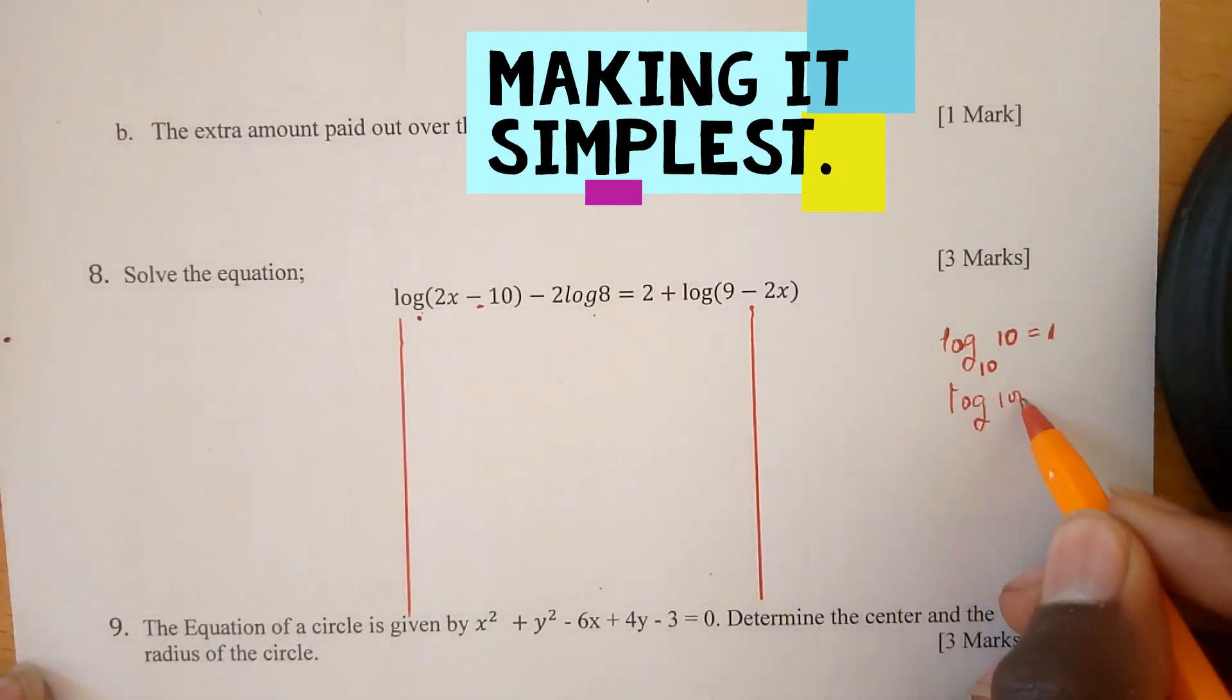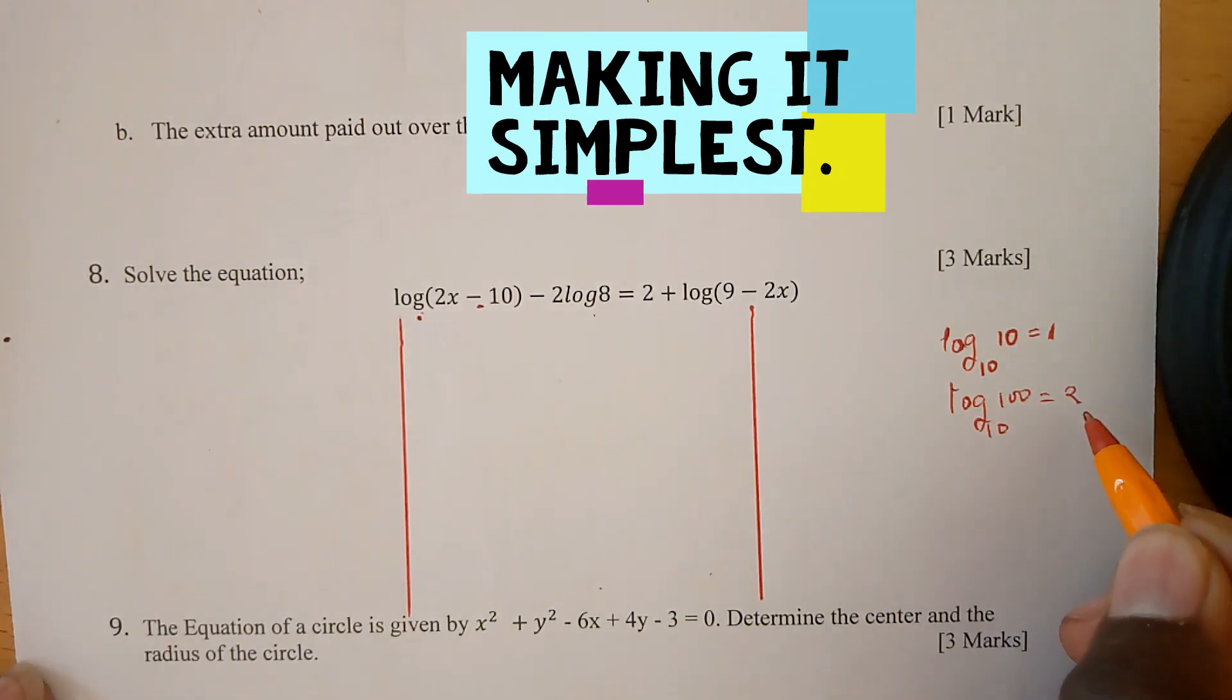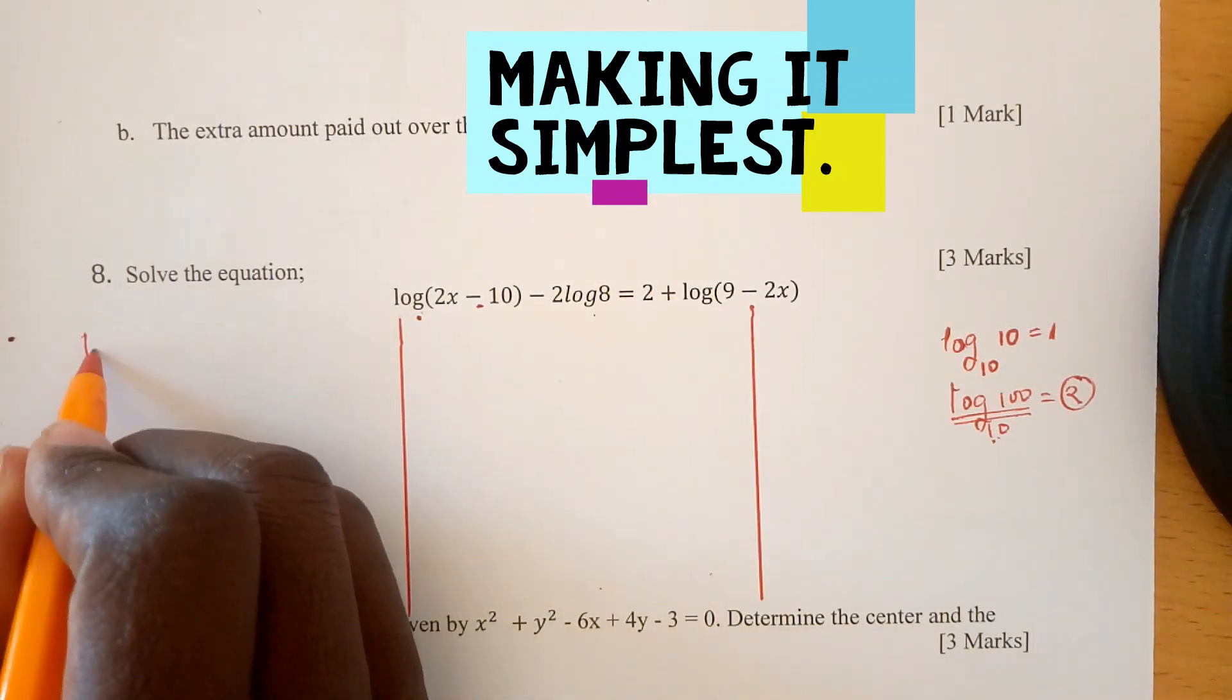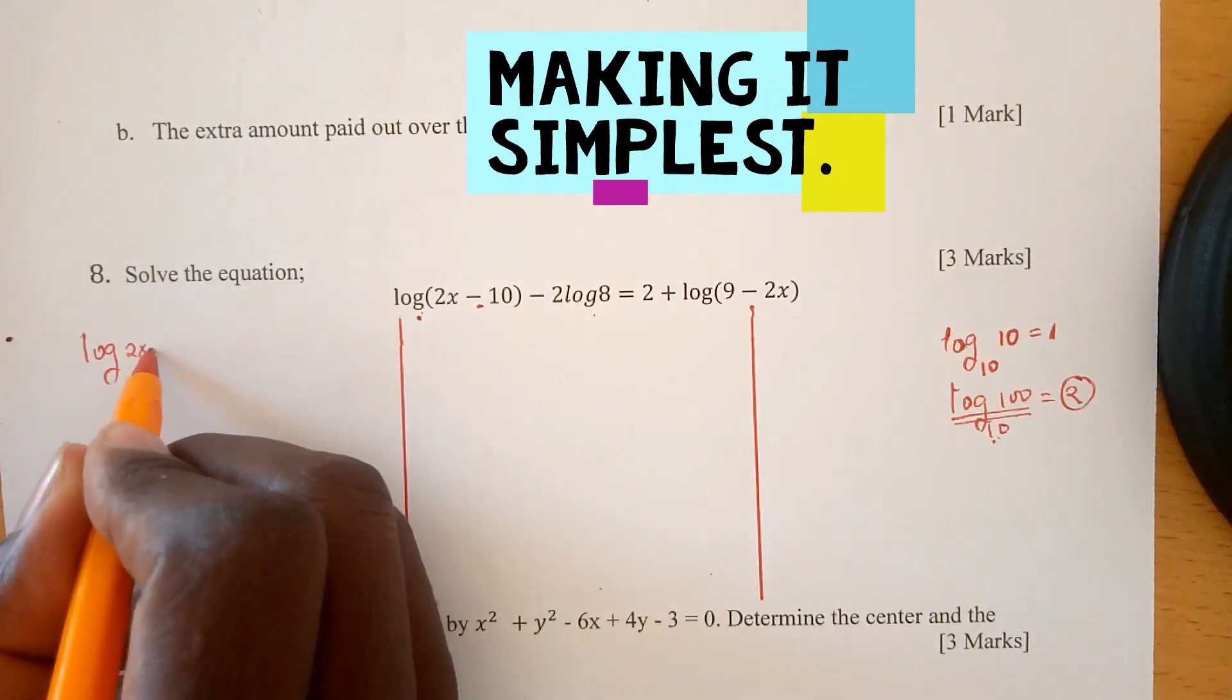Log of 100 to base 10 is 2, meaning instead of 2 we are going to use log of 100 to base 10, but our base 10 will be silent. Now we write log(2x - 10).